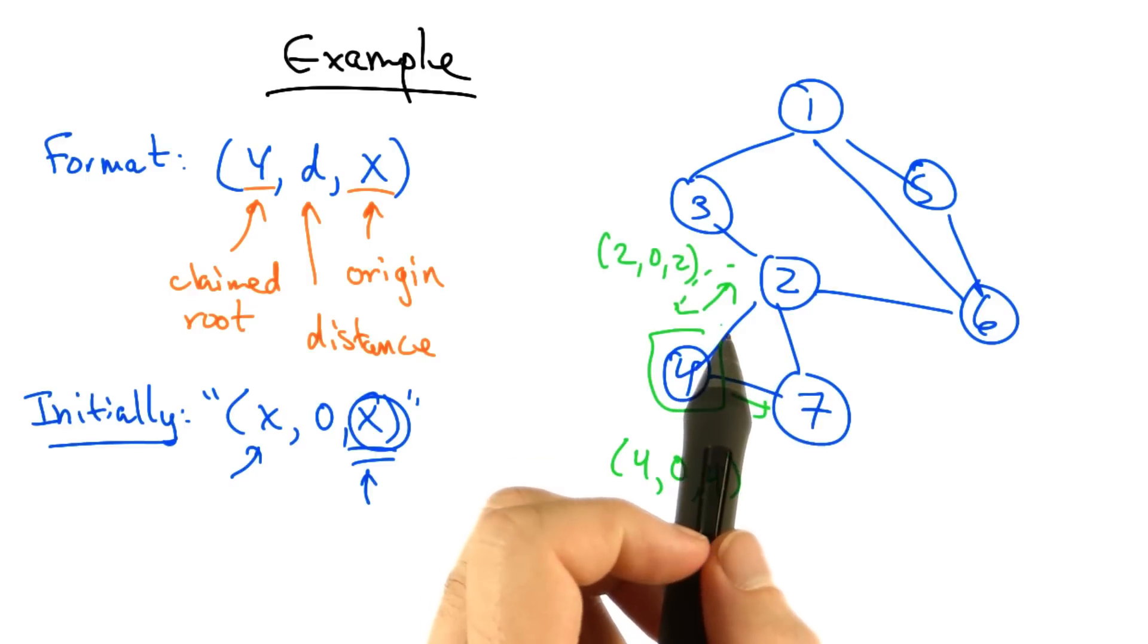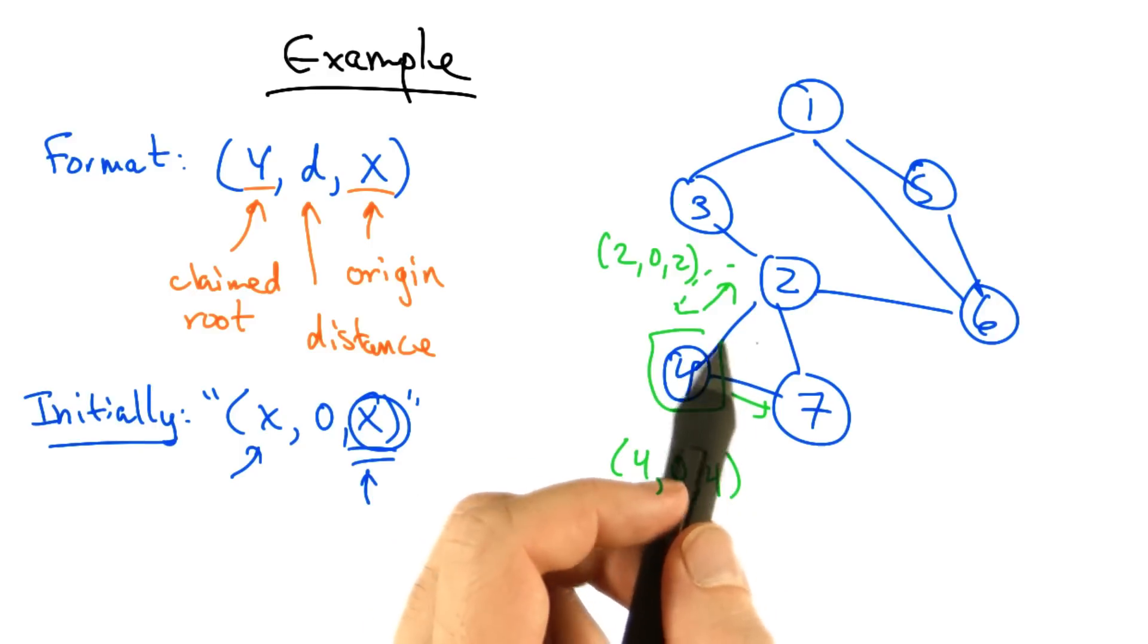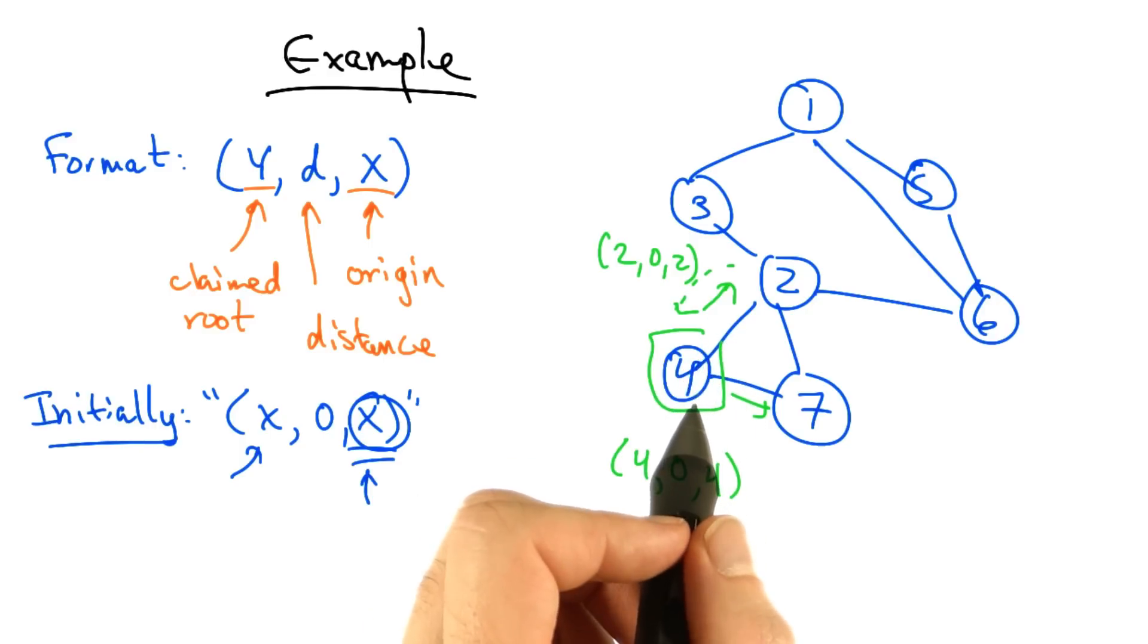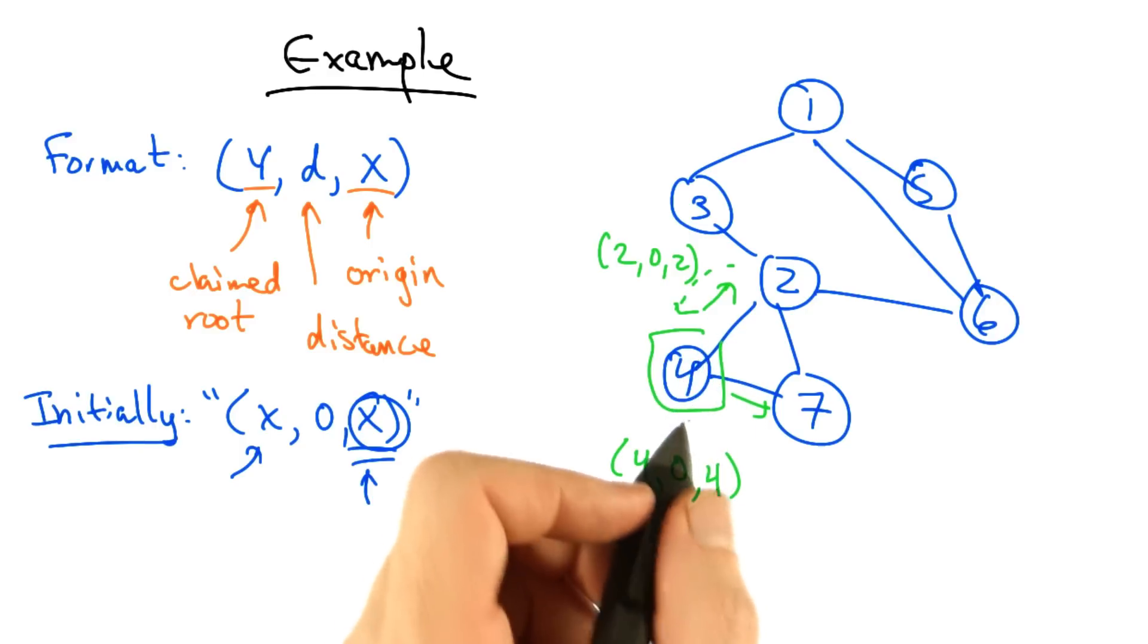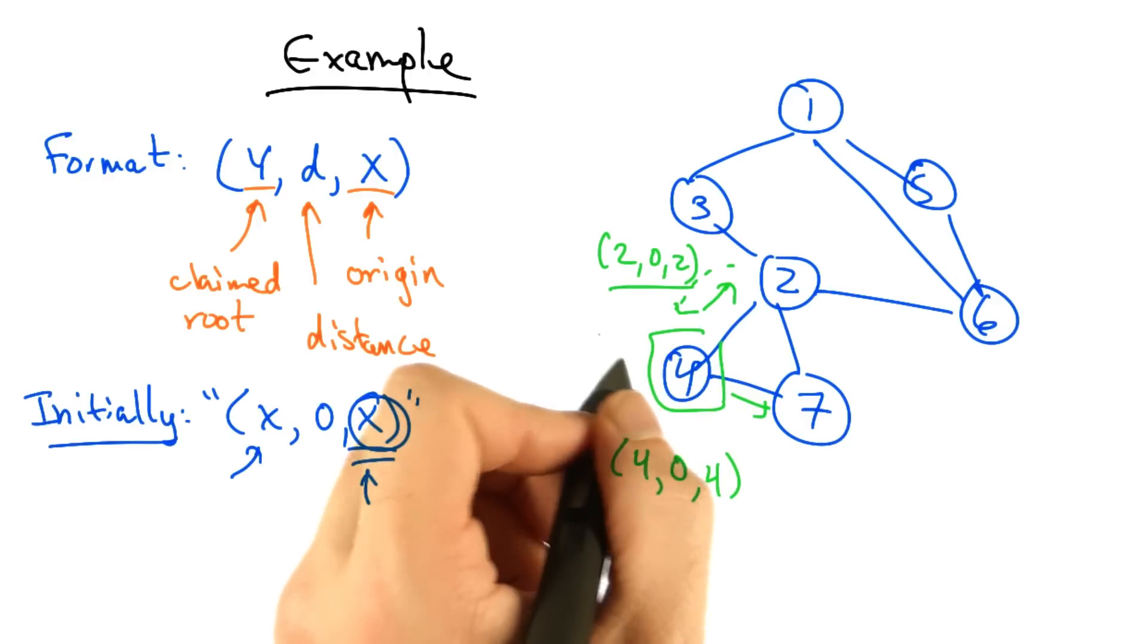But node 2 also thinks it is the root, so node 4 is going to receive the message 2, 0, 2 from node 2, and then it's going to realize that it is just one hop away from node 2. So node 4 will update its view of the root to be node 2.